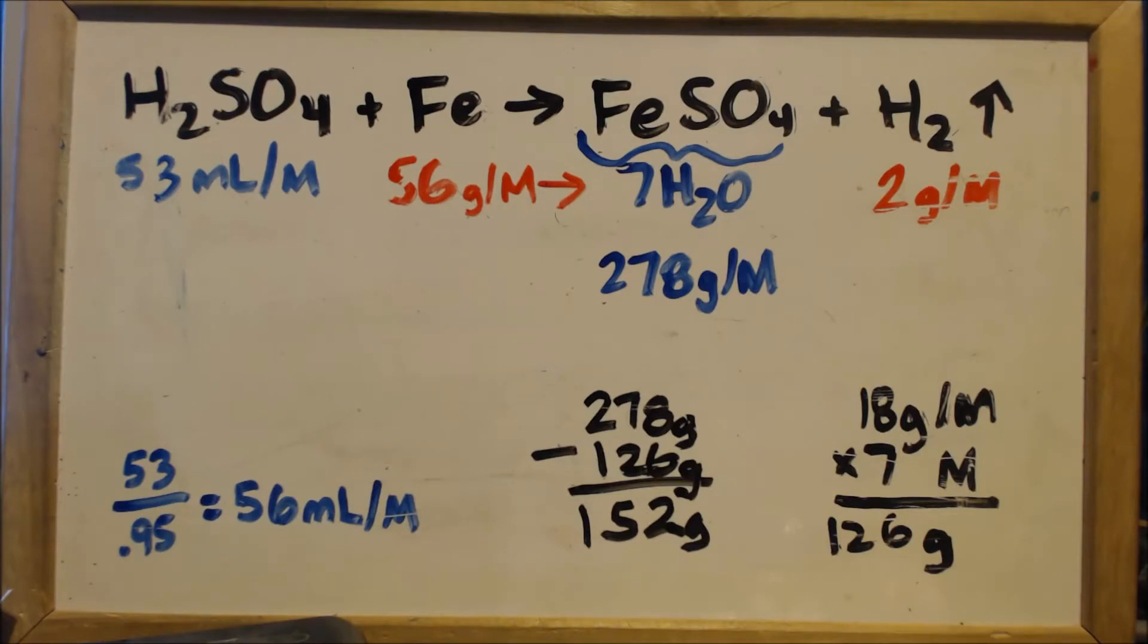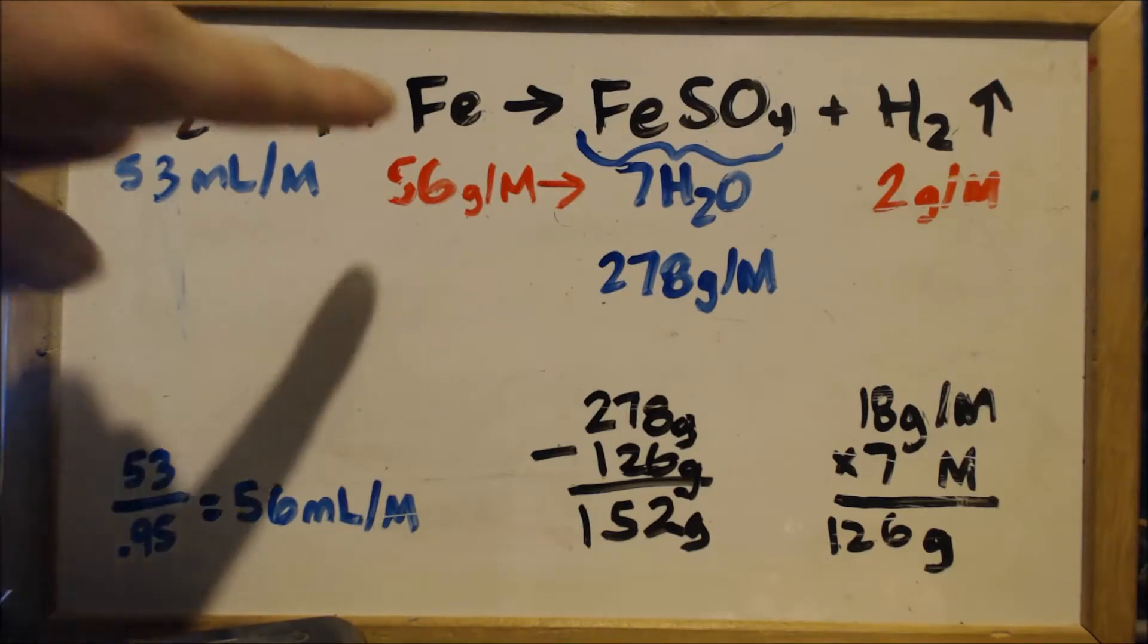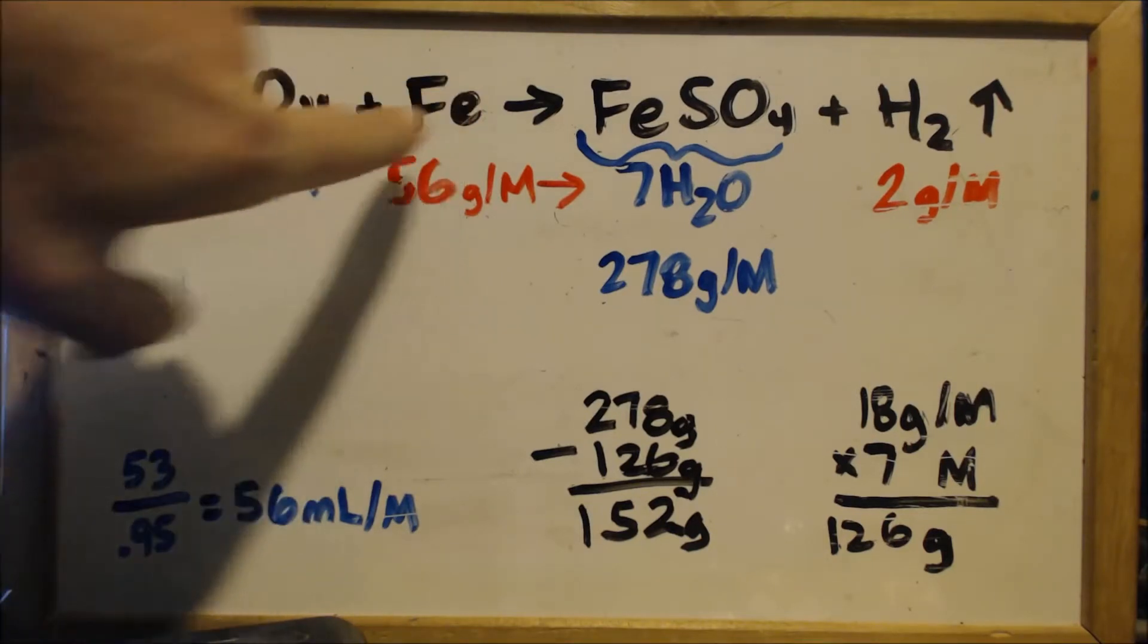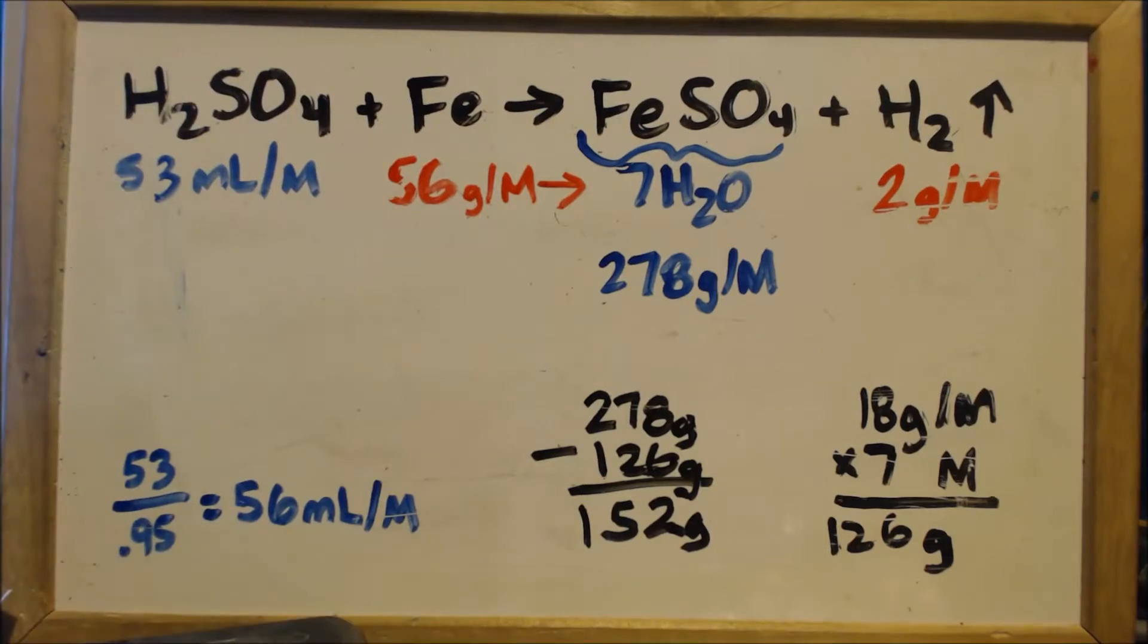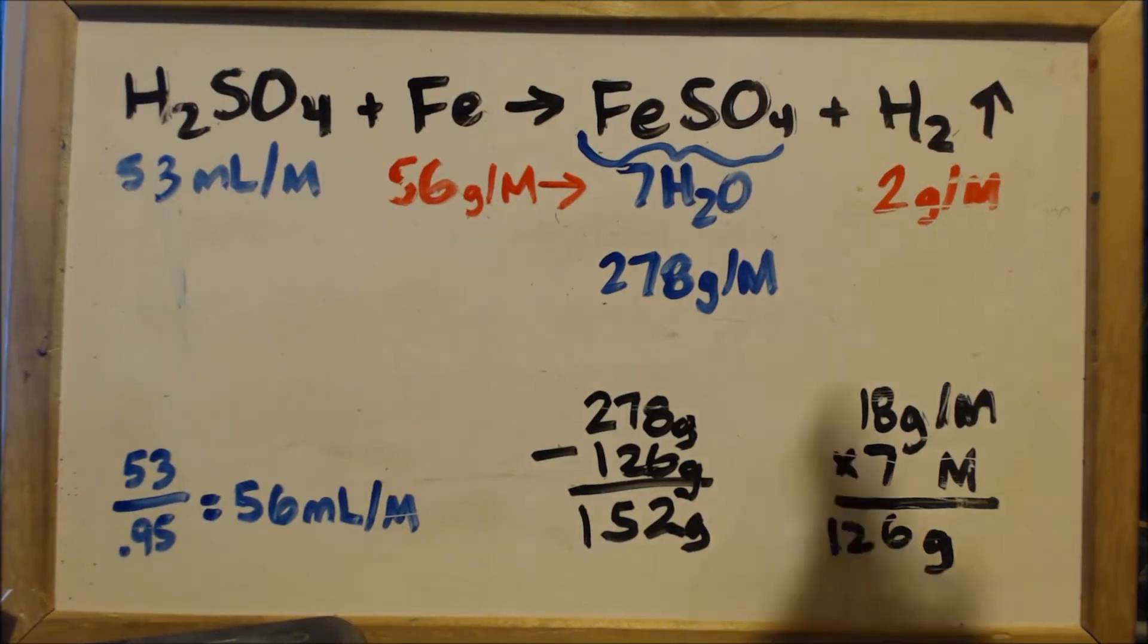And then we filtered out the copper and evaporated the water to get our salt. This time we're going to do it a different way. We're going to put the iron into sulfuric acid. And you can see you end up with a salt, iron sulfate. The H2 will come off as hydrogen, hydrogen 2.